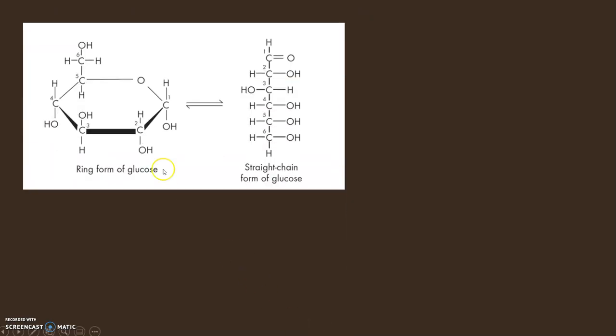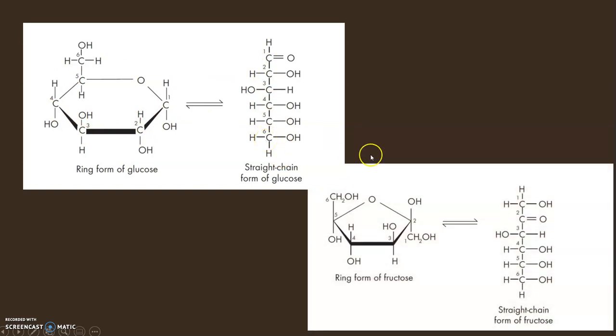They can be both illustrated as either rings or straight chains, showing their structure. This is basically a ring form of glucose, and this is a straight chain form of glucose. If they show you either picture, you should be able to tell that this is glucose. They both mean the same thing but are just organized differently. The same goes for fructose—this is a ring structure and this is a chain structure.